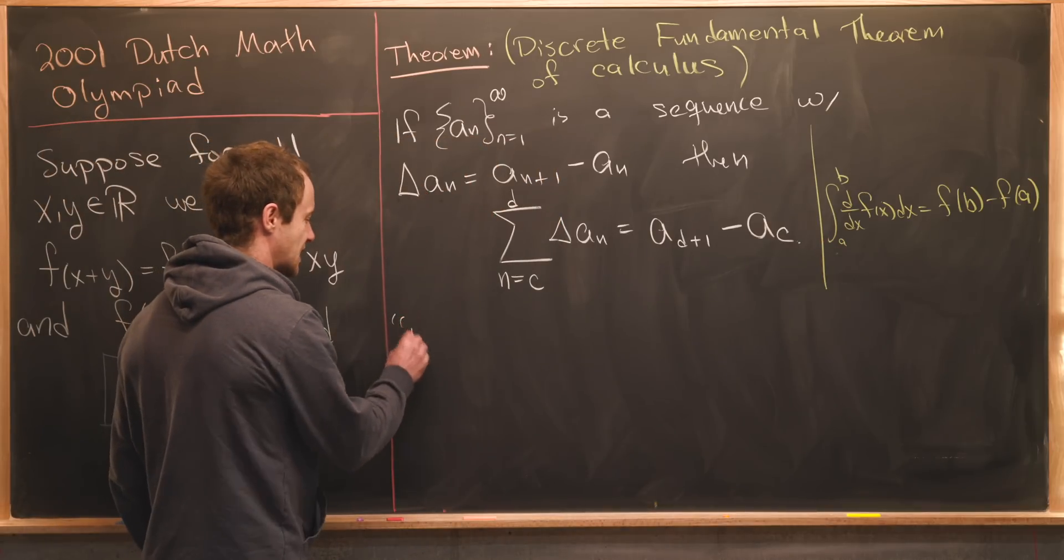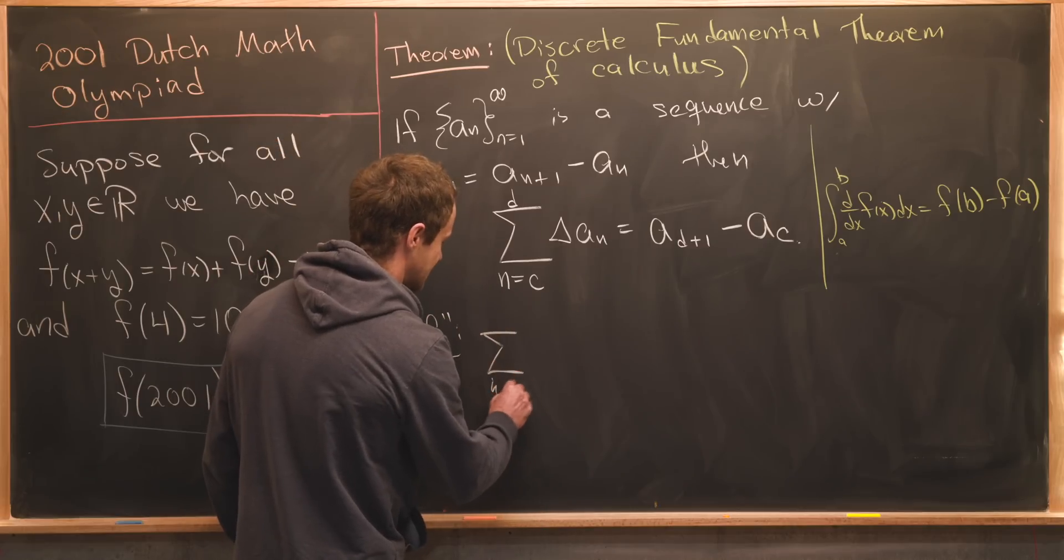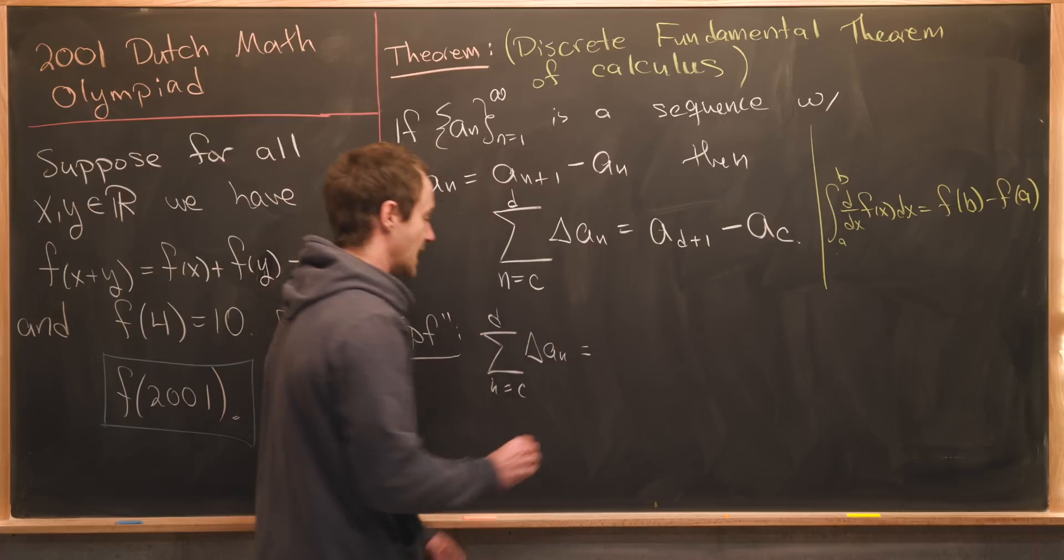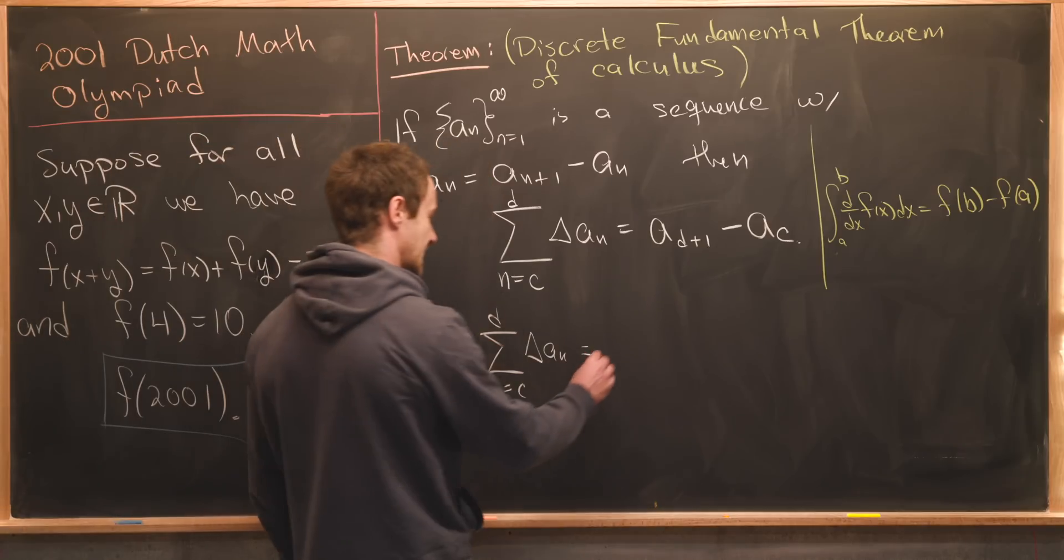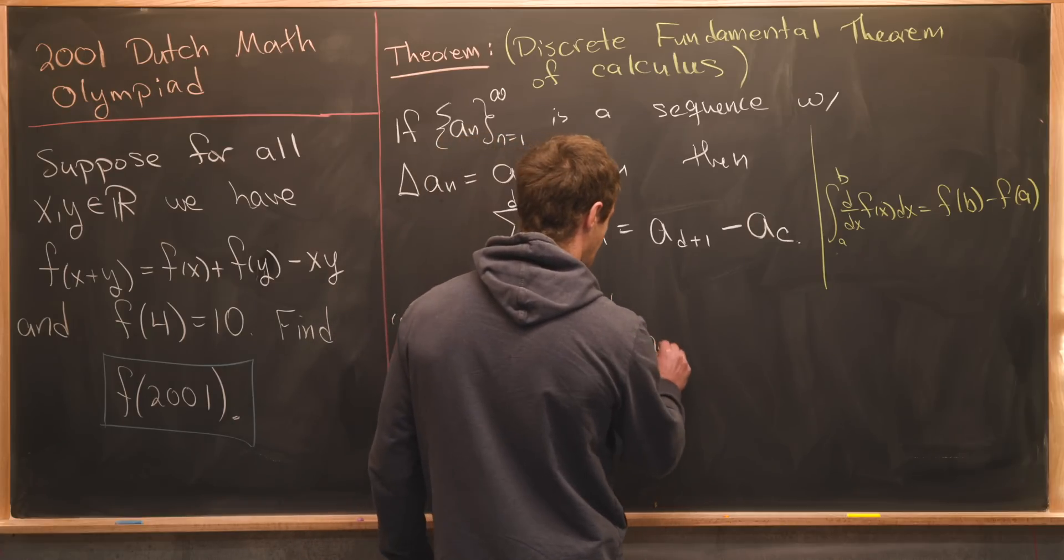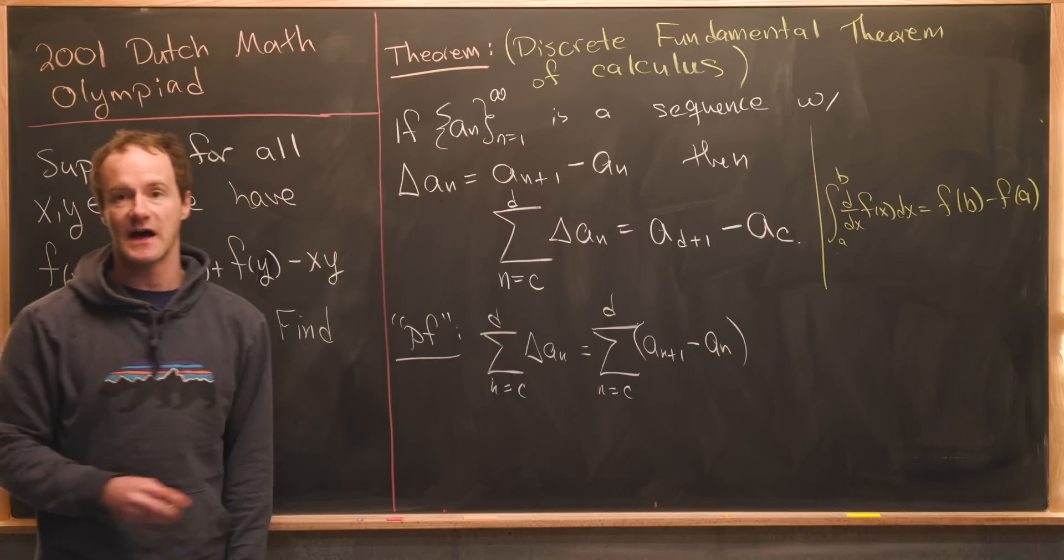I won't prove this carefully but I'll sketch a proof. We'll take this sum as n goes from c to d of delta a n and then we'll use the definition of delta a n to see that this is the sum from n equals c to d of a sub n plus one minus a sub n.